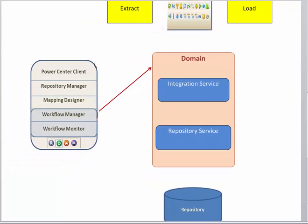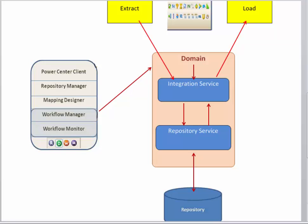Repository service takes the data out from the repository database and sends the information back to Designer. Now let me tell you how a workflow is executed. You send a request to run a workflow to the domain. Domain redirects the request to the integration service. Integration service needs metadata like source and target information, mapping logic, etc. to run a workflow. So integration service sends a request to repository service. Repository service in turn gets the information from repository database and sends it back to integration service. Once all relevant information is available, integration service extracts data from source, applies different transformations, and loads the data into the target as per the mapping logic.